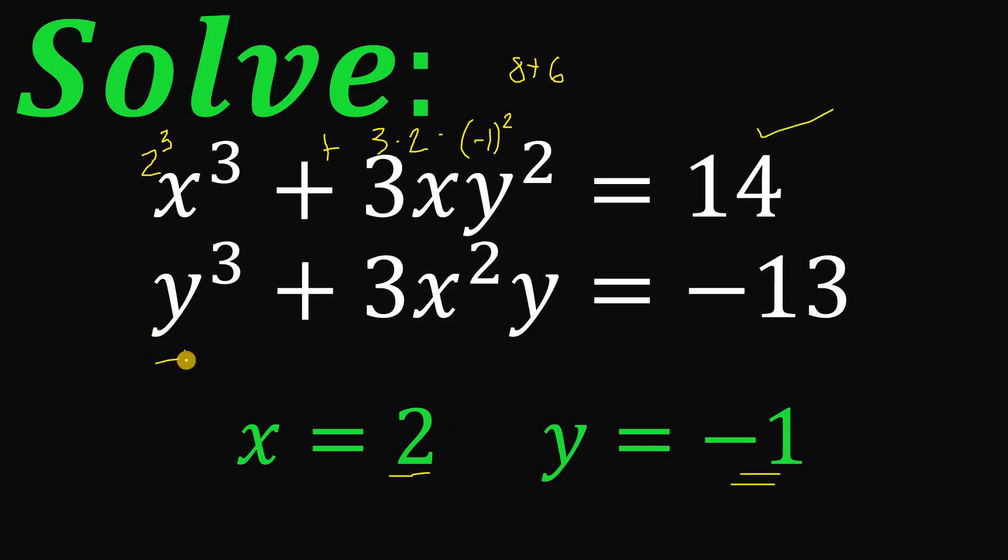Now on the second equation, y is negative 1. So (-1)³ + 3 × 2² × (-1) = -1 + 3 × 4 × (-1) = -1 - 12, which is definitely -13.